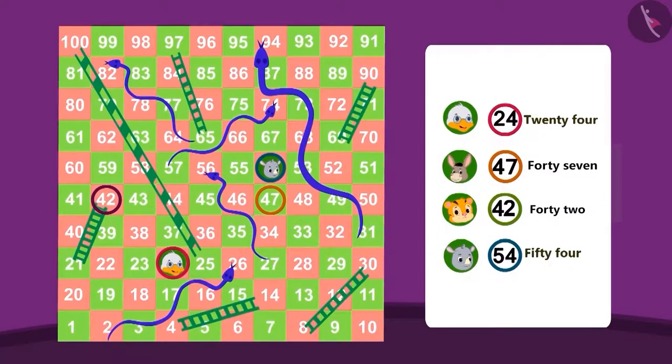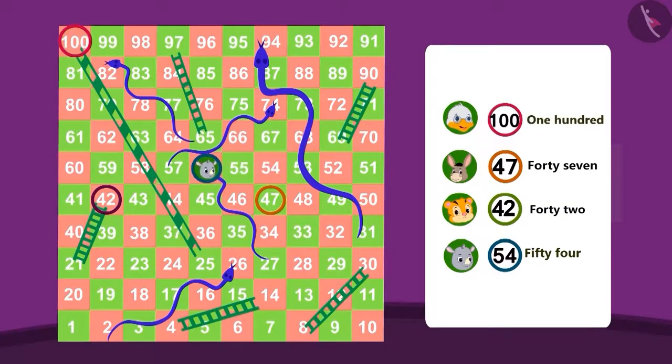Let's see how uncle won this game. And where are the other players? Oh, uncle got a ladder straight up to 100. And poor Gugu was swallowed by a snake straight down to 27.